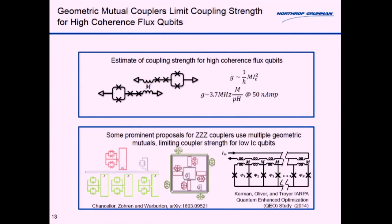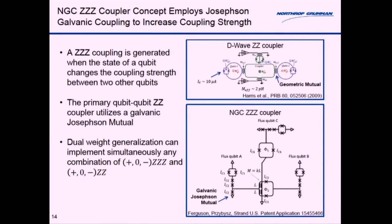This is a problem because if you're just trying to use a mutual inductance, generating coupling strength can be quite hard. If you just choose a 1 picohenry coupler at 50 nanoamps you only get 3.7 megahertz of coupling. Of course if you have larger currents you can get larger couplings but again it's a fundamental challenge. Some of the prominent examples in the literature for ZZZ couplers do use a number of mutual transformers which can by these type of arguments reduce the coupling depending on the strategy that you use.